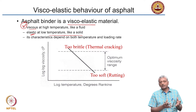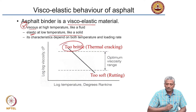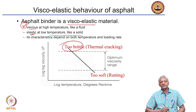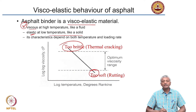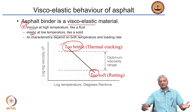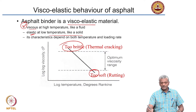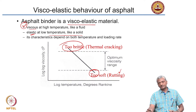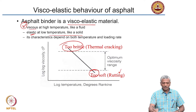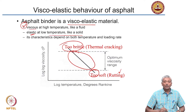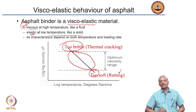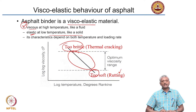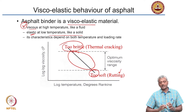Polymers can become very brittle at very low temperatures. When the temperature is very low, you can get thermal cracking. When the temperature is very high, your polymer will start flowing. We get problems in asphalt pavement such as rutting when the asphalt becomes very soft at high temperatures. So, you have an optimum range of temperatures over which you can actually work with the asphalt, and that is very important to ascertain by proper testing.